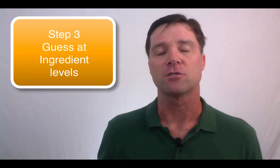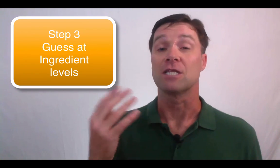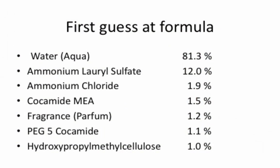Step 3 is to guess at the ingredient levels based on the label position. Now that we know which ingredients are crucial, we have to take a guess. If we start with the assumption that the last ingredient is in the formula at 1%, then the rest of the ingredients must be at levels higher than that. Since I know the basic structure of a shampoo, here is one such guess: water at 81%, ammonium lauryl sulfate at 12%, ammonium chloride at 1.9%, kokamide MEA at 1.5%, fragrance at 1.2%, PEG-5 kokamide at 1.1%, and hydroxypropylmethylcellulose at 1%. This isn't probably exactly the formula they use, but it's close enough to start.